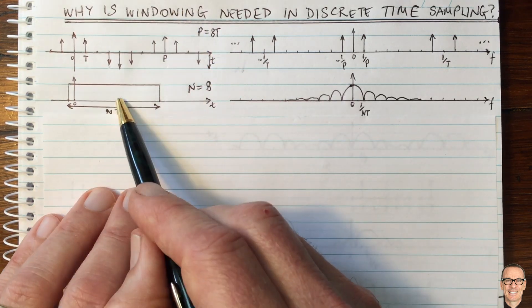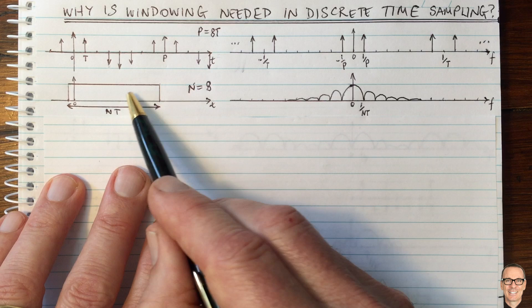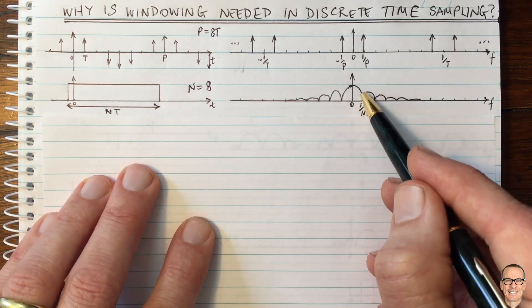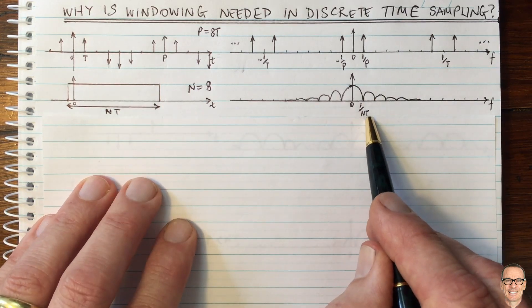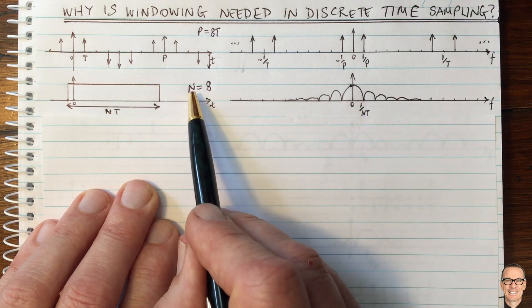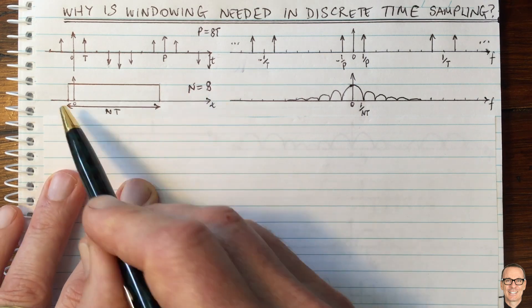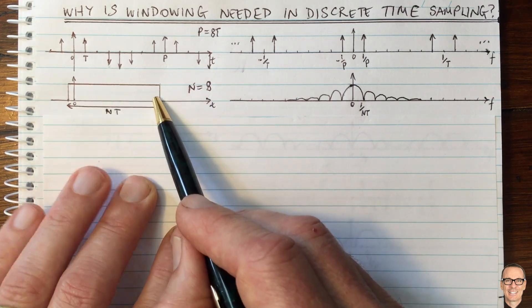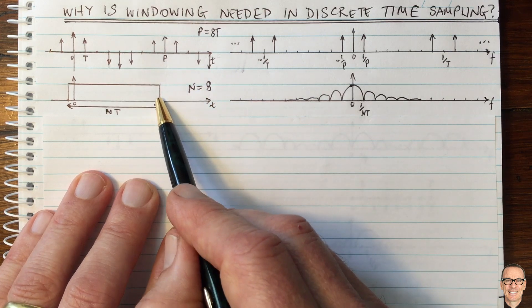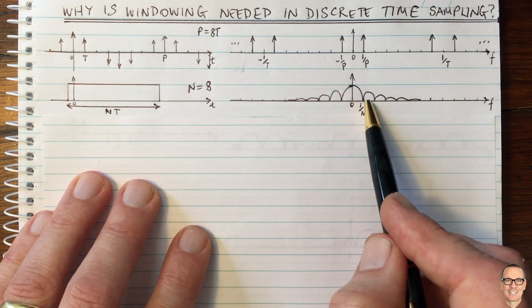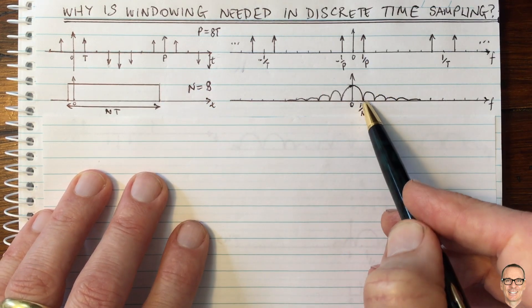Now the Fourier transform of this, which is a rect function, the Fourier transform is the sinc function. The first zero is one on NT, and I've drawn this example for N equals eight. Of course, you can window for any length of time that you might like to. I'm just choosing this to start with just to make a point.